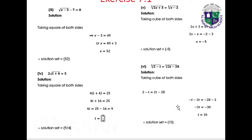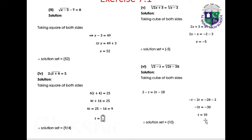Part 6: ∛(2 minus t) equals 2t minus 28. Taking the cube of both sides: 2 minus t equals 2t minus 28, so minus t minus 2t equals minus 28 minus 2, giving minus 3t equals minus 30, therefore t equals 10. Solution: t equals 10.